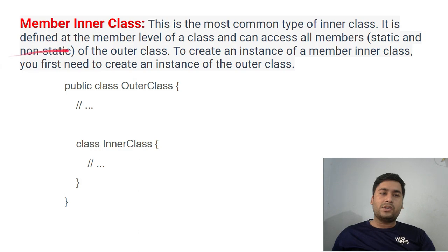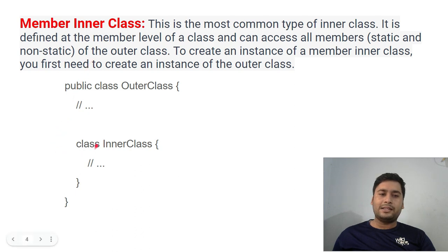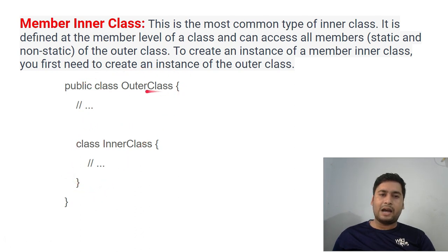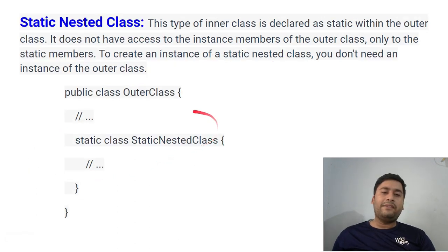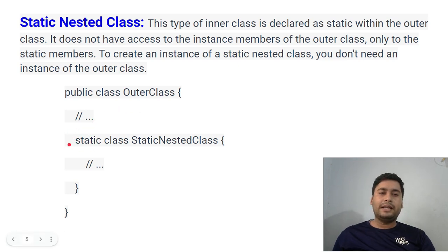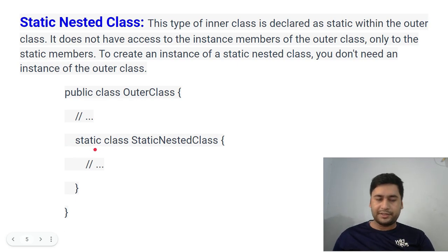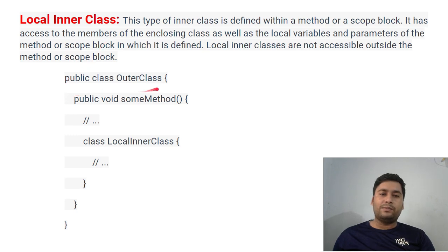Member inner classes are classes declared inside another class at the class level. For example, this is the outer class and inside this class we have declared one more class which is the inner class — that is called a member inner class. If in the member class you put the static keyword, that will become a static nested class.